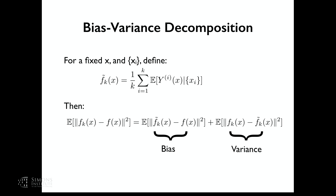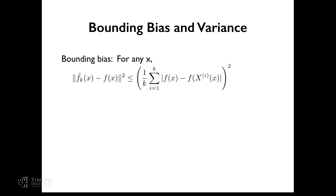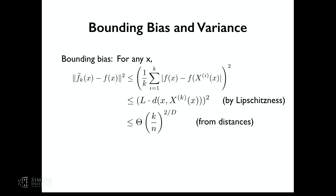Bounding the bias: by Lipschitzness, each term is at most L times the distance squared. Since the distances are about (k/n)^(1/d), squaring gives (k/n)^(2/d). For the variance: you need bounded variance noise, and the variance becomes sigma_y^2 over k.